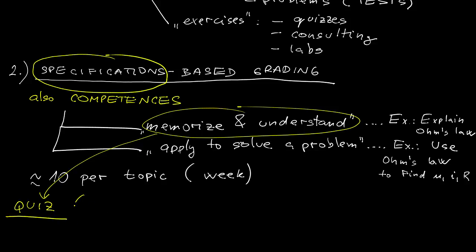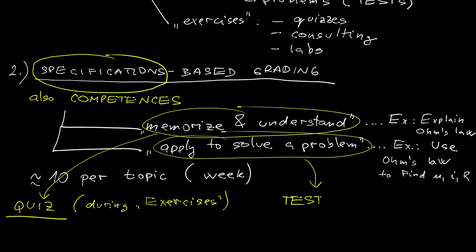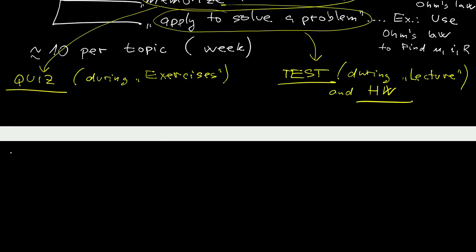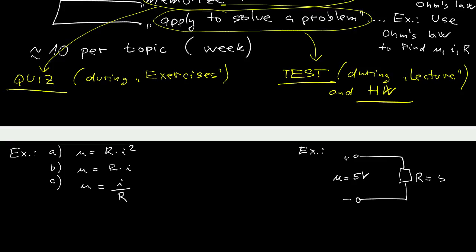The first type of competencies will be checked by means of short online quizzes that you will fill in during exercises, whereas the second class of competencies will be checked in longer written tests on which you will work during what we call lectures and occasionally homework assignments. For the memorize and understand type of competencies for Ohm's law, you will be given a few versions of Ohm's law and your task will be to show which one is correct. For the problem solving skills related to Ohm's law, you will be given some circuit with voltage and resistance given and you will be asked to determine the current. The mapping of the competencies to the tests is fairly straightforward and transparent.